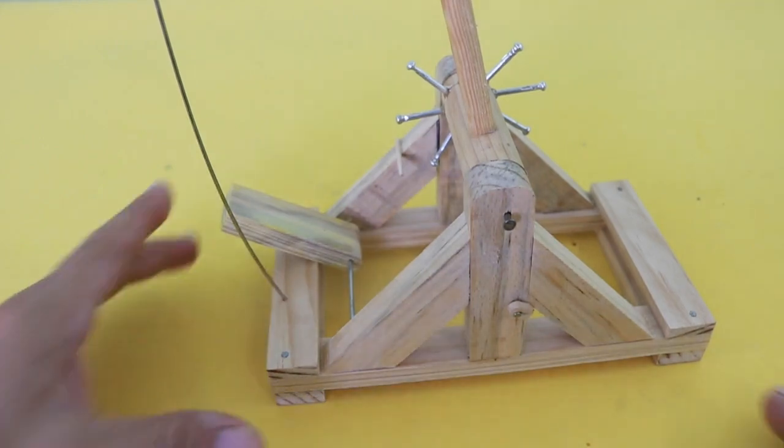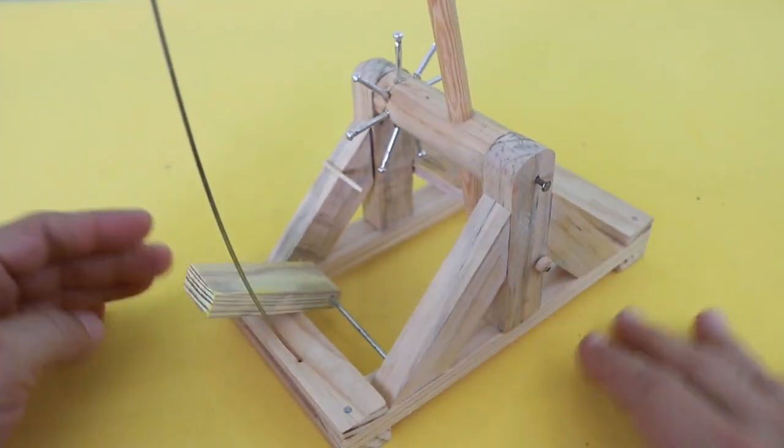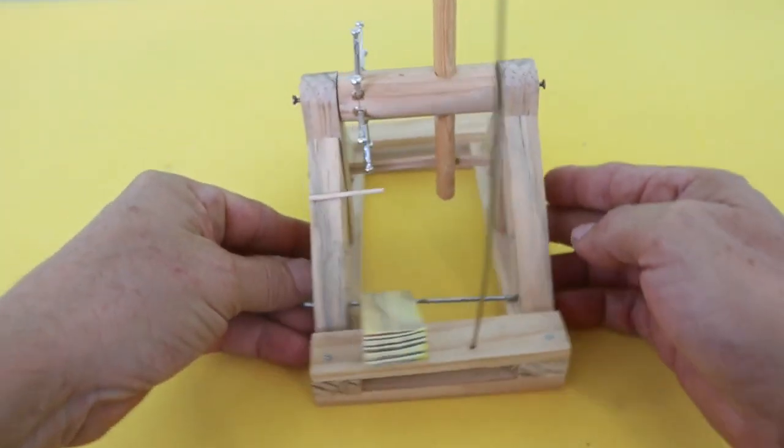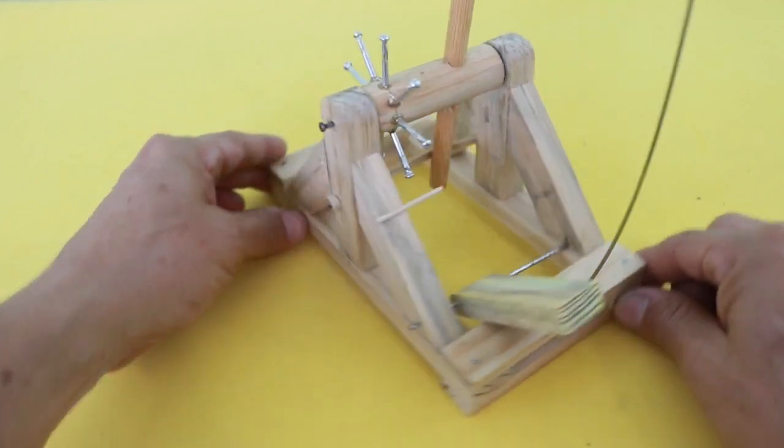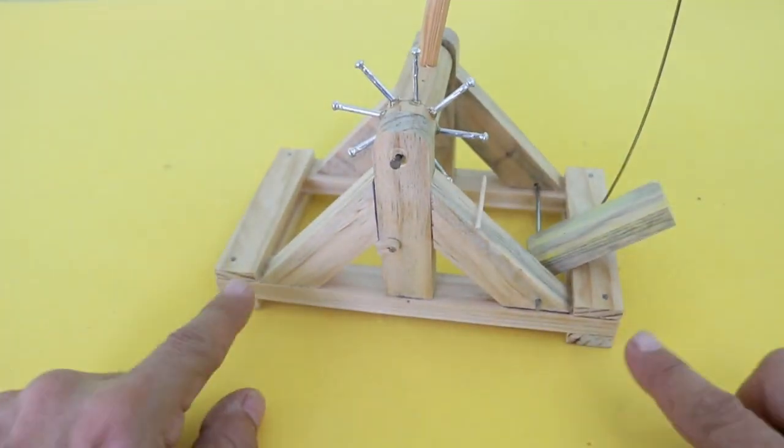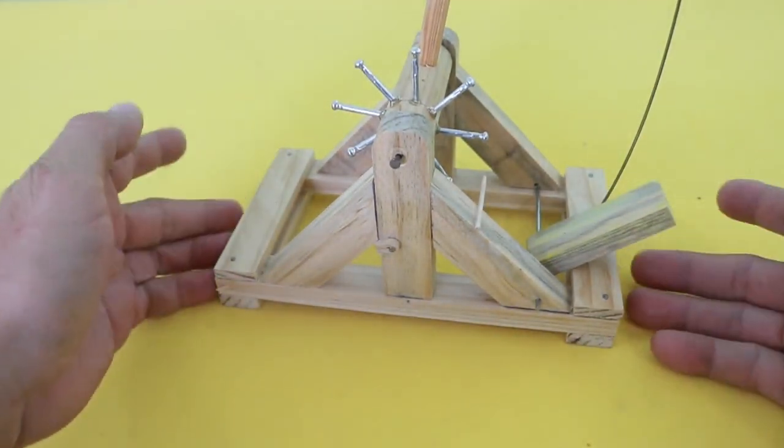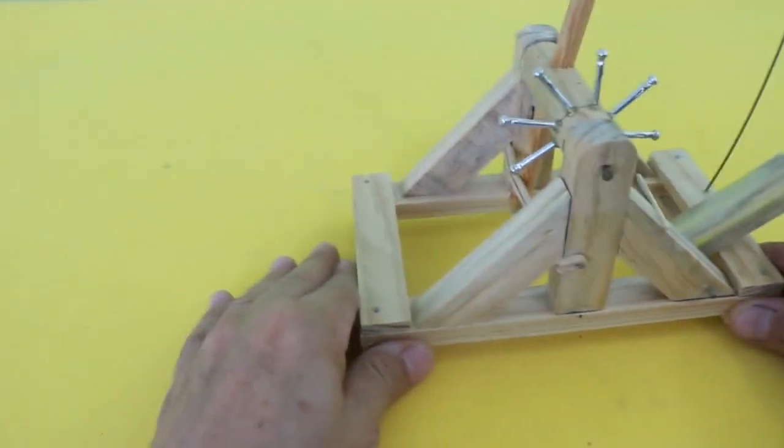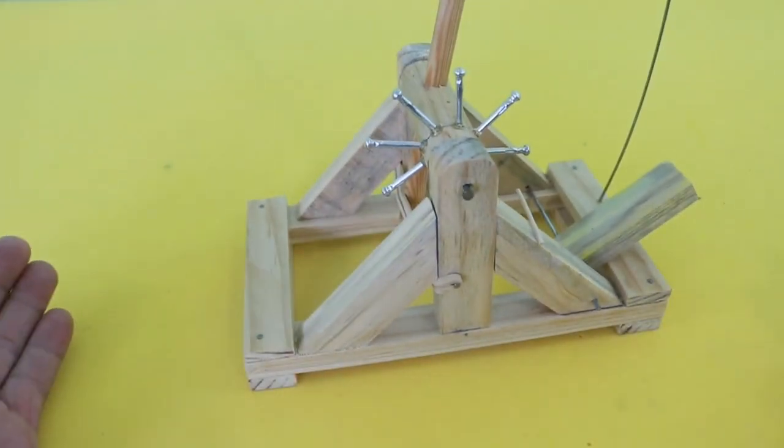Let me show you the details of the construction. As you can see, we have a wooden frame. In the real versions, wooden wheels were used in each of the corners in order to move the catapult to the side where it was needed.